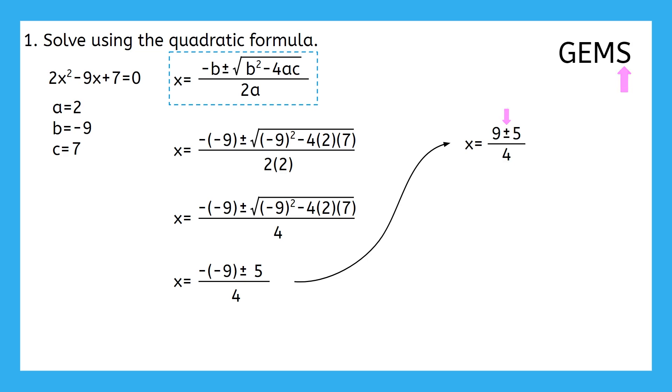Well, since we can't add and subtract at the same time, let's split them up and simplify each numerator grouping separately. That gives us two separate equations: x equals 9 plus 5 over 4, and x equals 9 minus 5 over 4. Go ahead and finish solving for both solutions in your guided notes. We'll check your work when you're done.